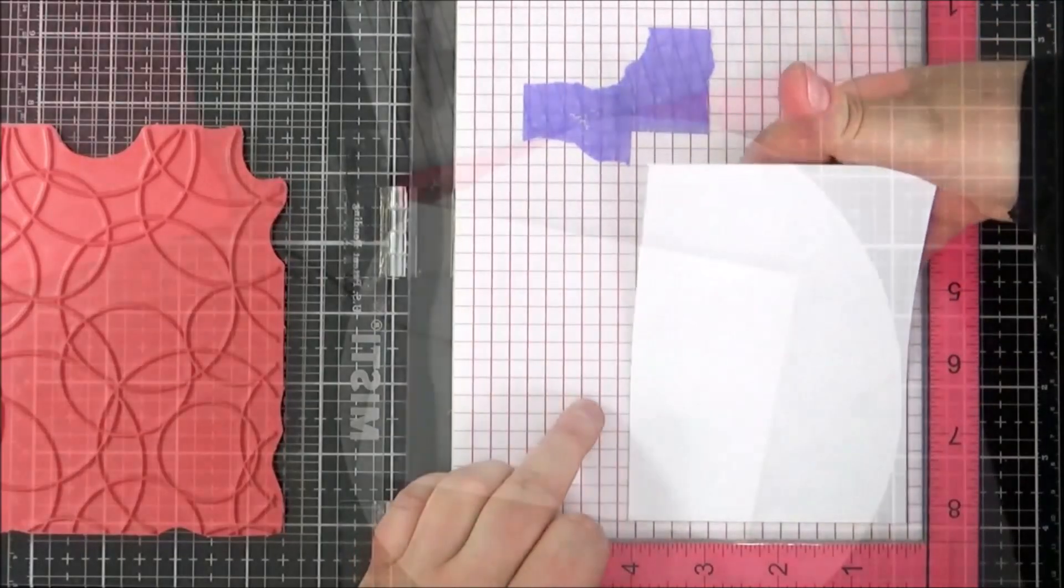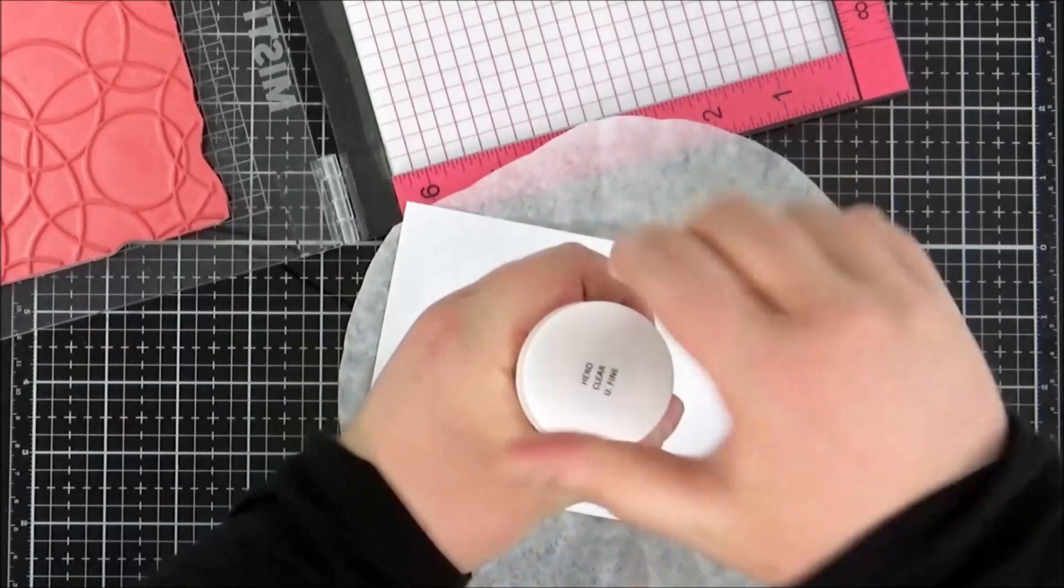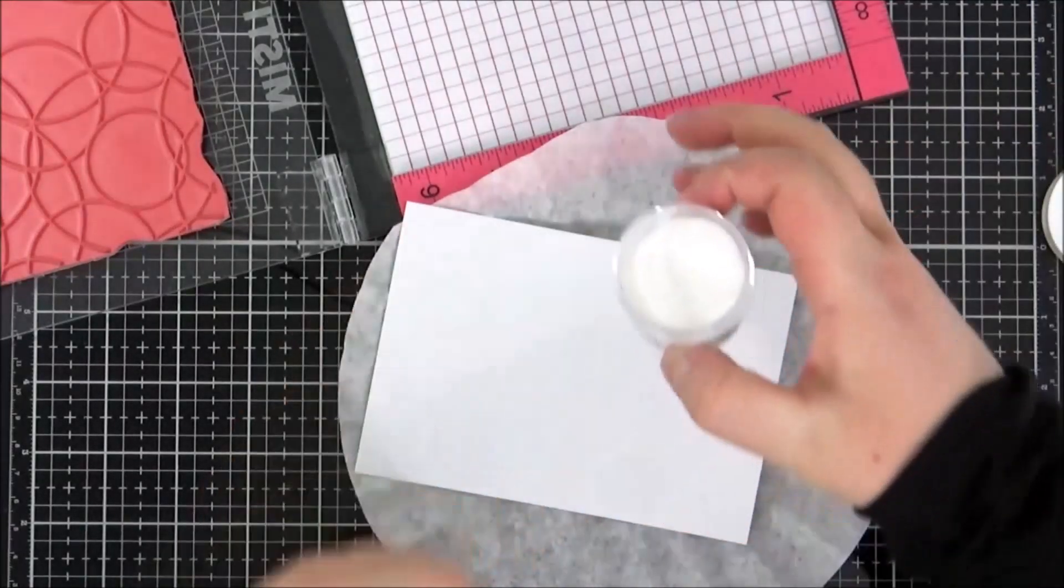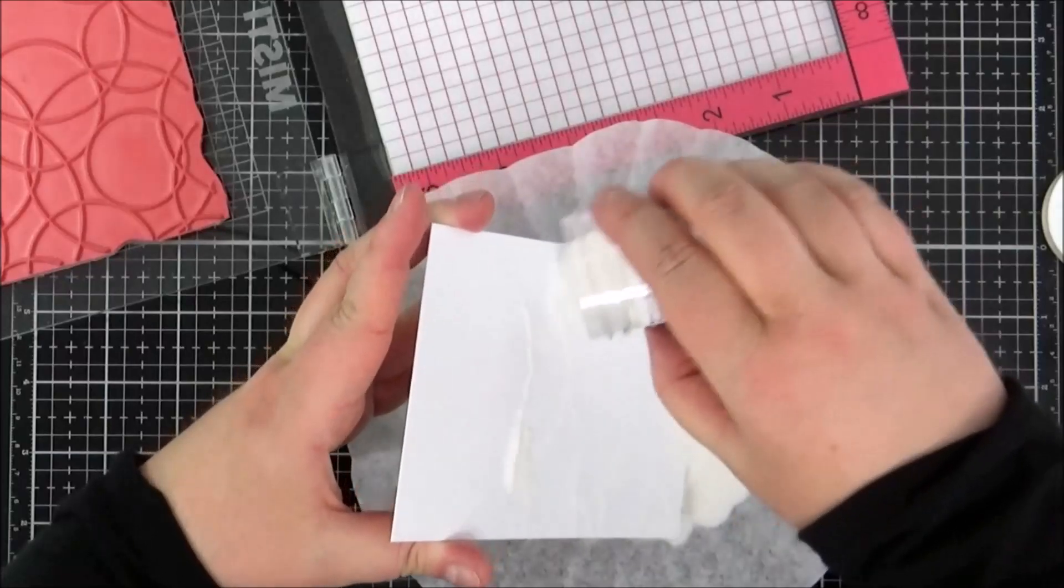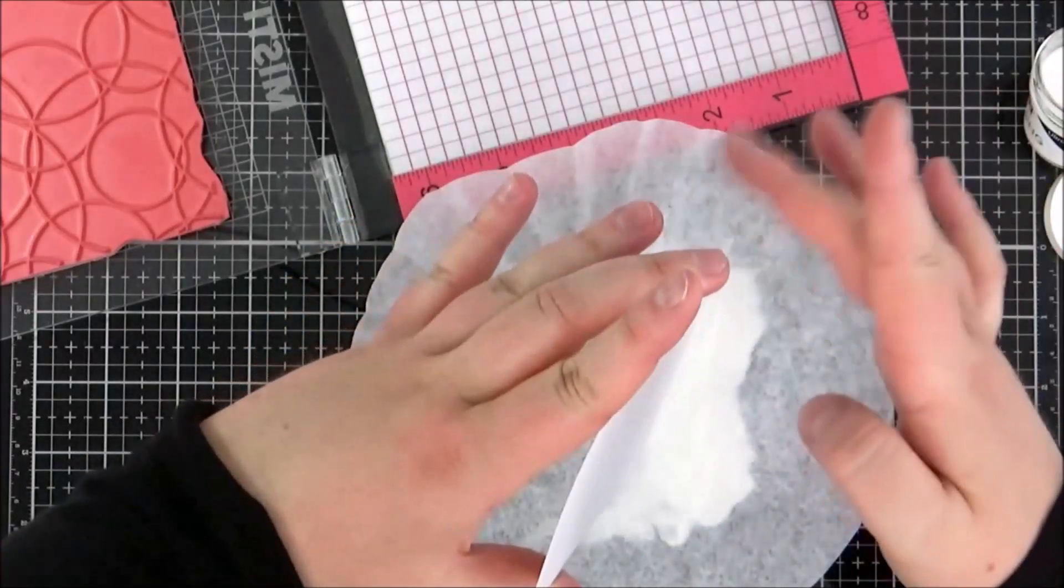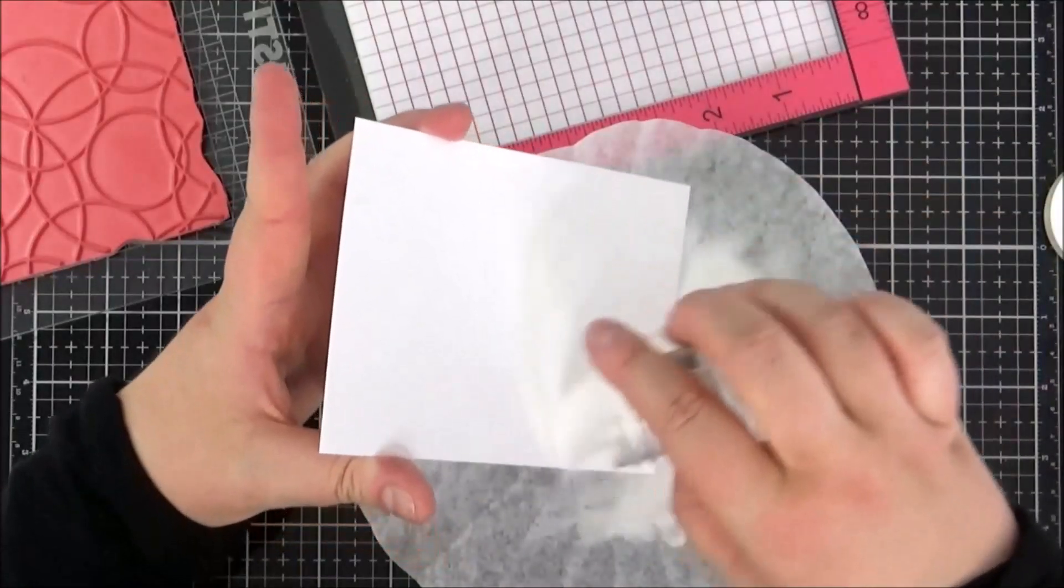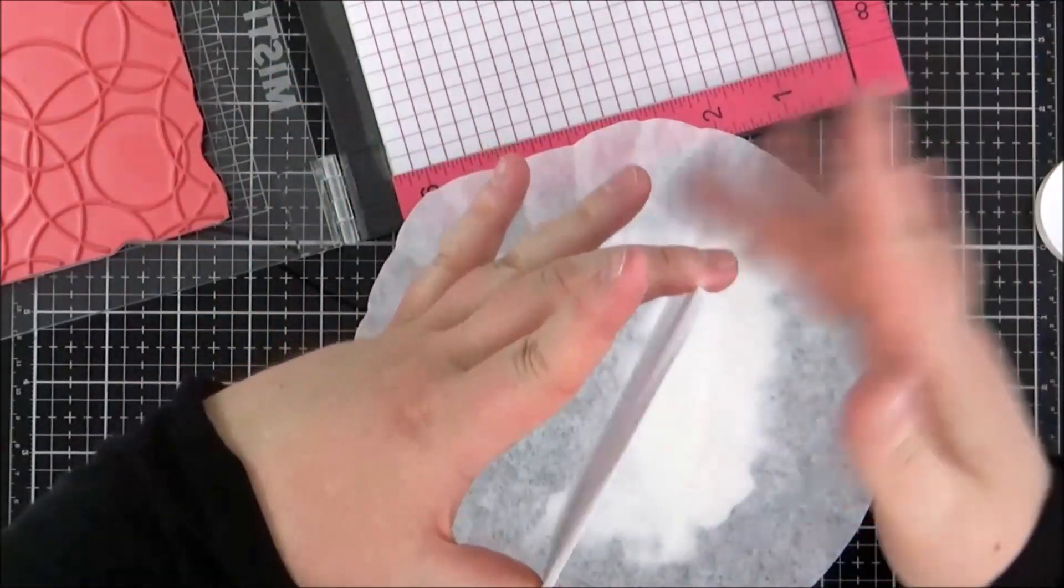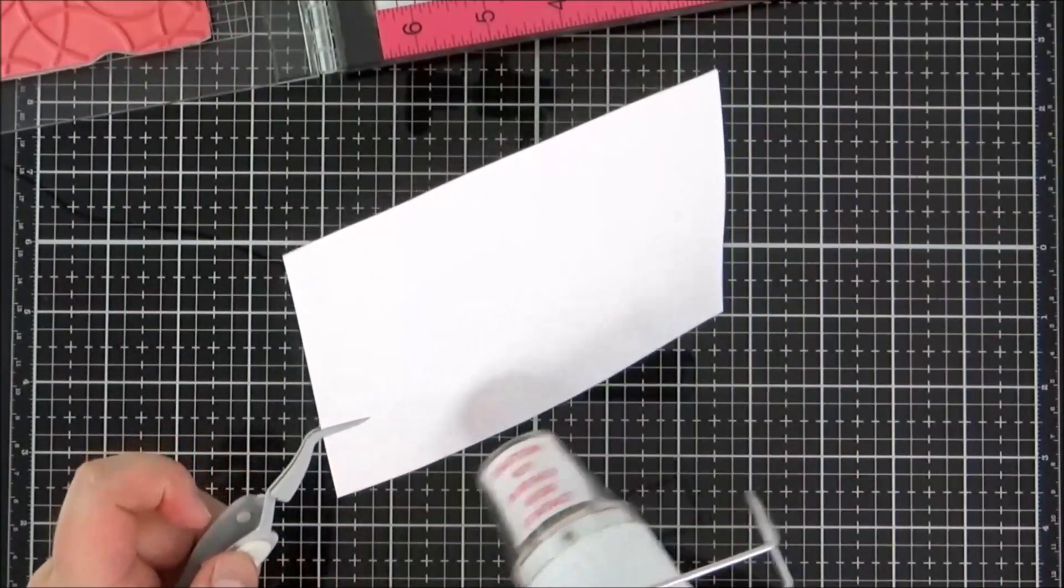I can lift that off and add some embossing powder onto this. This is Hero Arts Ultra Fine Clear Embossing Powder. The lines of this stamp are quite thin, so I thought the Ultra Fine would be better than the original clear. I'm adding that on, tapping off the excess, then heat setting it until it's completely melted.